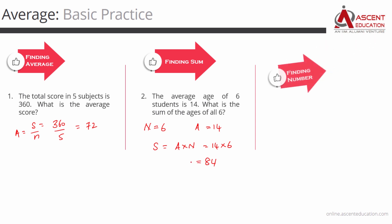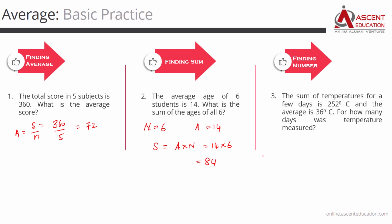The third case — we'll find out the number of elements. The sum of temperatures for a few days is 252 degrees Celsius, so sum equals 252. The average for these days is 36. Number of days equals sum divided by average, which is 252 divided by 36, equal to 7. So the temperature has been recorded for 7 days.